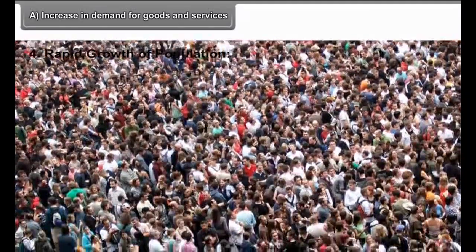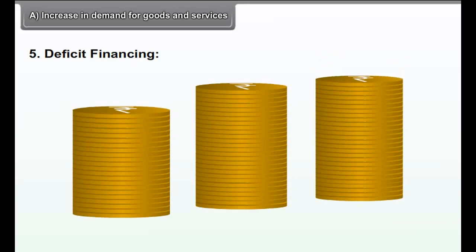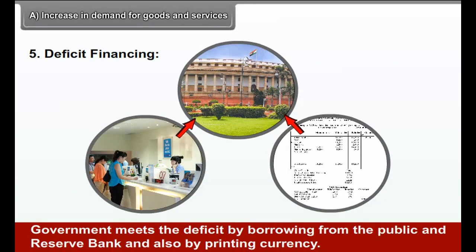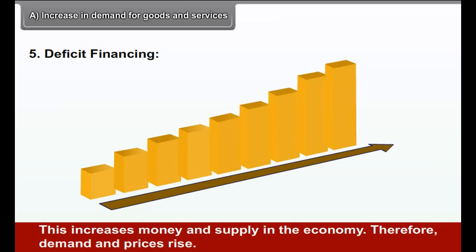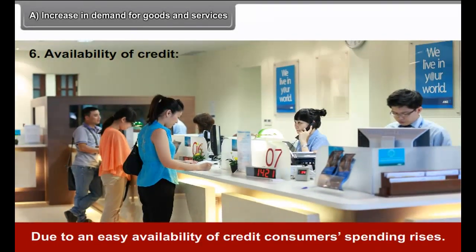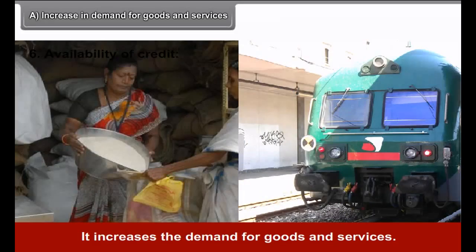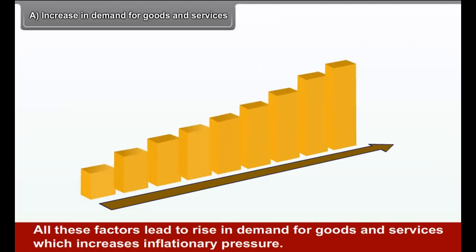Fourth, rapid growth of population. A rapidly growing population increases the level of demand for goods and services in a country. Fifth, deficit financing. The government meets the deficit by borrowing from the public and reserve banks and also by printing currency, which increases money supply in the economy, so demand and prices rise. Sixth, availability of credit. Due to easy availability of credit, consumer spending rises and increases demand for goods and services. All these factors lead to a rise in demand, which increases inflationary pressure.